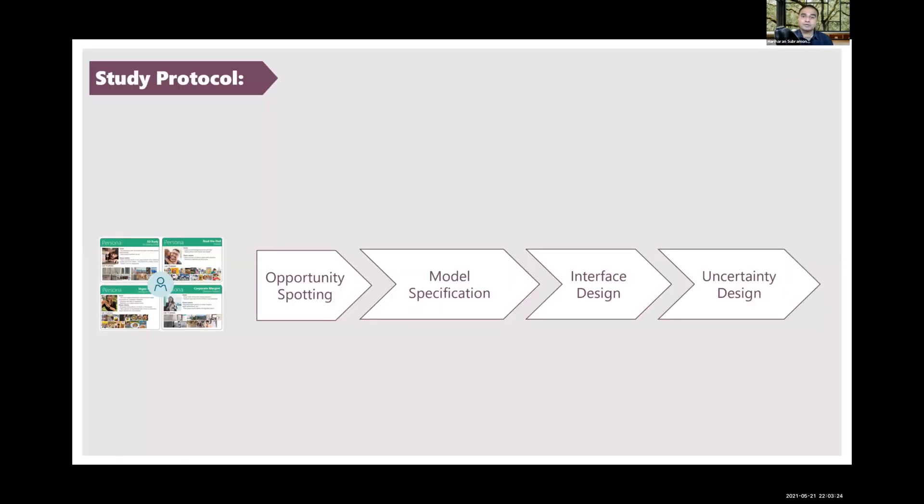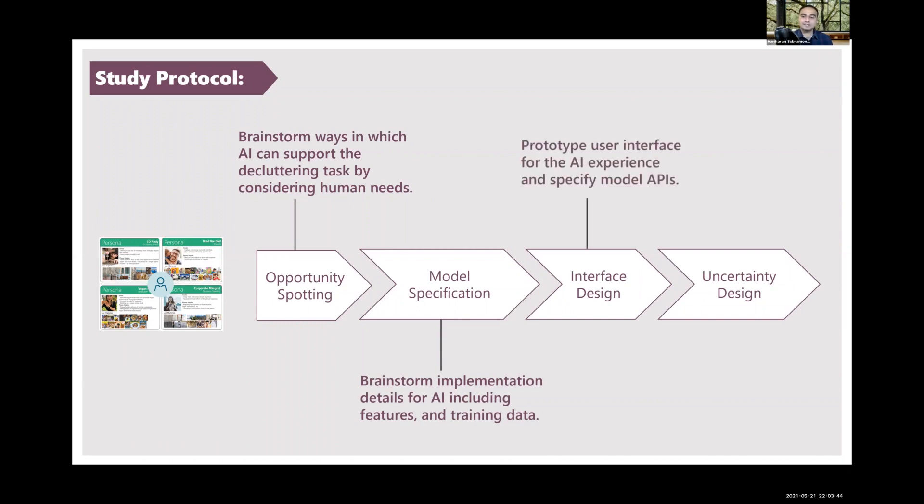We based our study protocol on human-centered AI design guidelines from various industry resources. At a very high level, participants first brainstormed opportunities for incorporating AI into the photo deletion workflow. Then, they discussed ways to implement the model, including rules, assumptions, and constraints. Next, they designed the user interface and corresponding model APIs, and in the last step, they designed for AI's uncertainty, including identifying errors, explainability, learnability, and setting end-user expectations about the AI.